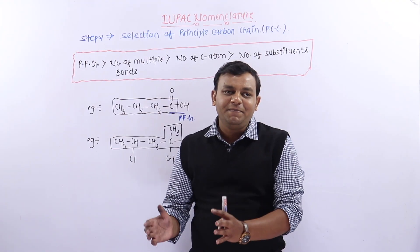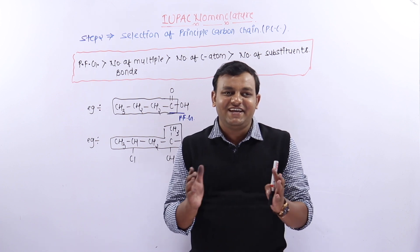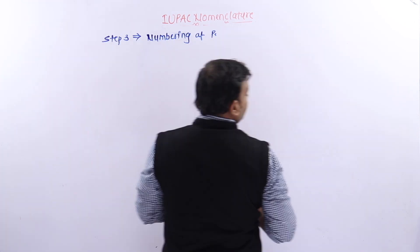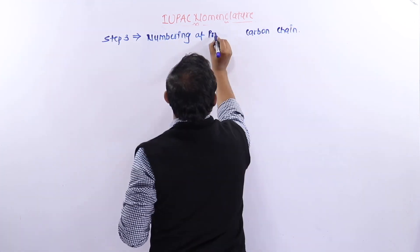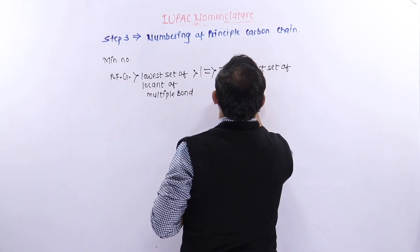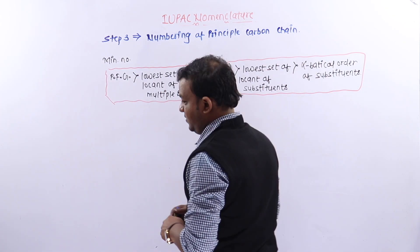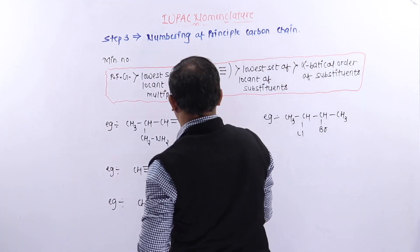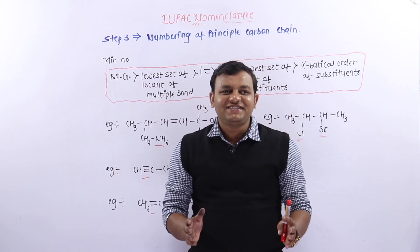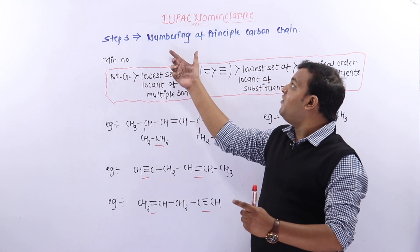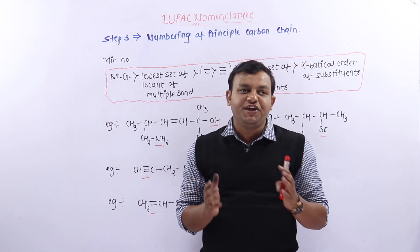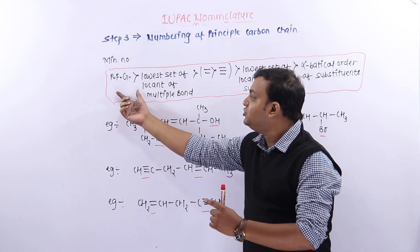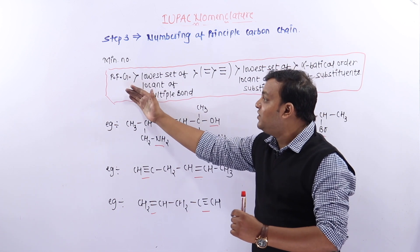तो बात करते हैं हम अपनी Step 3 की। चलिए start करते हैं Step 3 — numbering of principal carbon chain। Principal carbon chain की numbering हम कुछ इस तरह से करेंगे कि principal functional group को minimum number मिले।